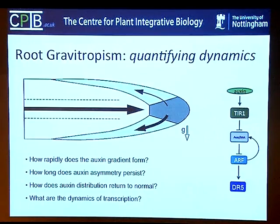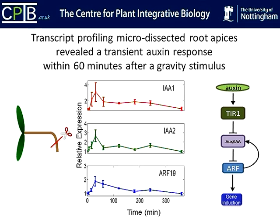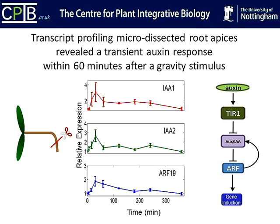If you generate a gradient with the properties of this new sensor, what are the actual dynamics of transcription we can detect? We performed micro-dissection of root apices of gravity-stimulated root tips and performed transcript profiling. Within a 60-minute period we see a transient increase in a variety of auxin-inducible genes, resulting in a detectable transcriptional output within this timescale. We can detect changes within 15 minutes - the transcriptional changes are very rapid.